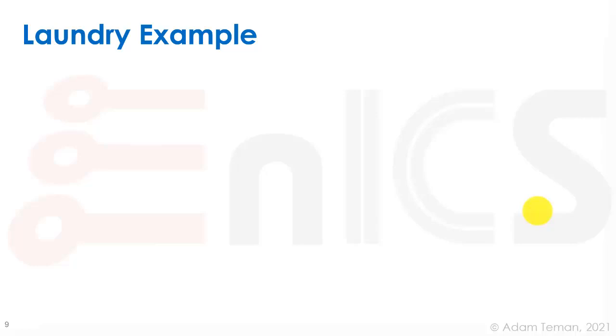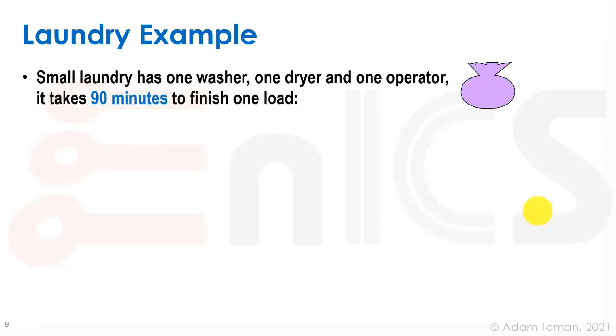Our second example is a laundry and this is to show you what pipelining does and how we can use pipelining to increase throughput. So it's very common to find in different computer science books, this idea of laundry. So we have this laundromat and the laundromat has one washer, one dryer, and one operator. It takes a total of 90 minutes to finish one load.